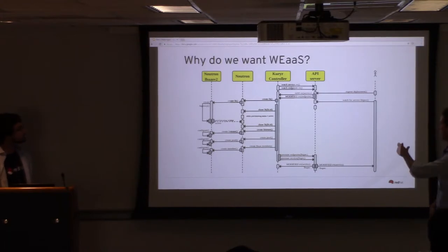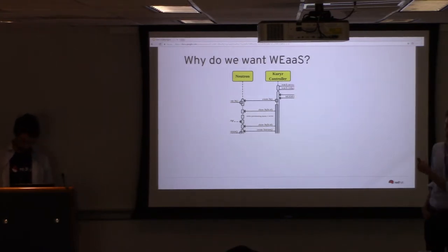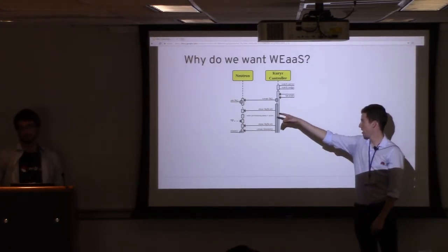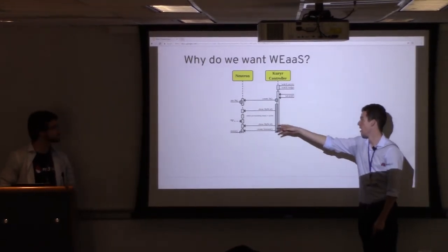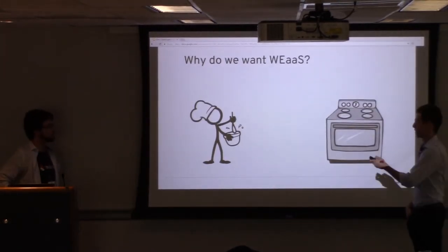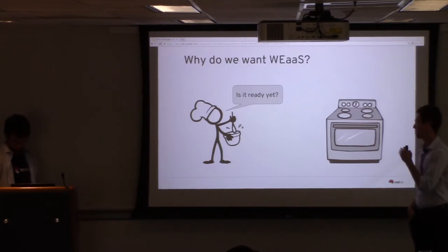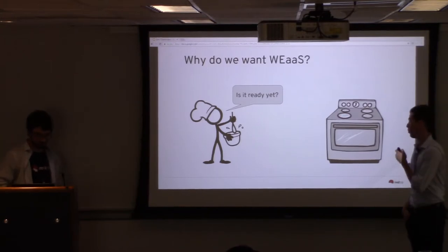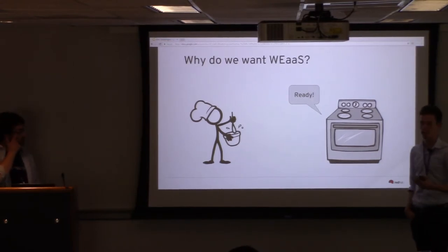Why do we want this tool? This is a diagram of the interaction between services. You really only need to look at the part between the Kuryr Controller and Neutron, which is OpenStack's networking tool. The Kuryr Controller creates a load balancer, and then it will continuously poll Neutron using the OpenStack API until the load balancer becomes active.